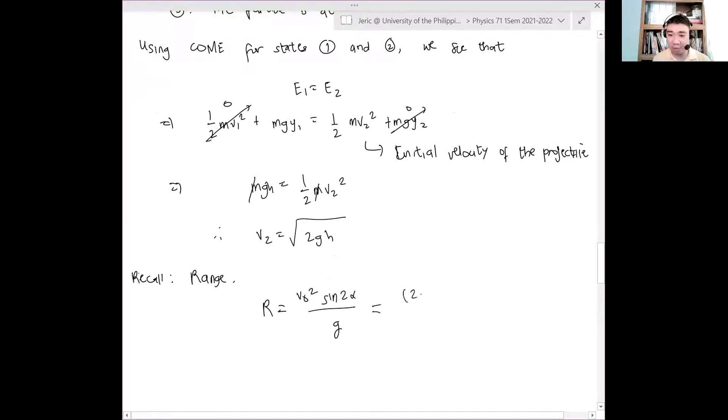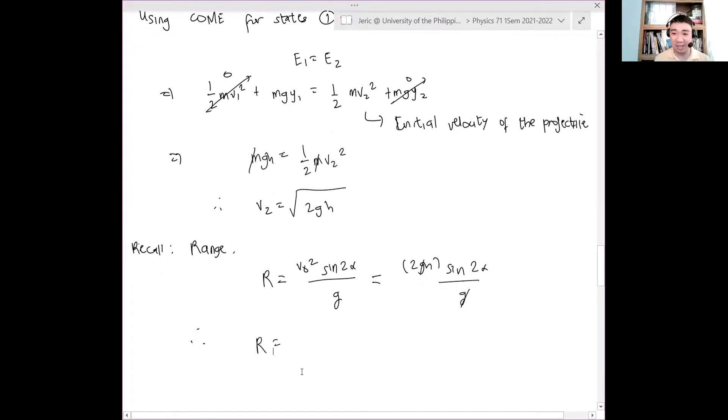Therefore, if I substitute my V naught squared here, I have 2GH quantity. That's square root. So I square it, mawala ang square root, sine 2 alpha all over G. The G will cancel. And therefore, the range is again independent of G. This is just 2H sine of 2 alpha. It is only dependent on the initial height of the object and the angle for which it is launched.